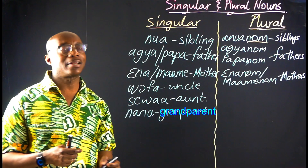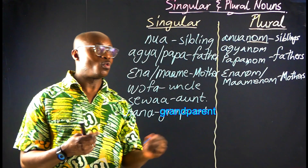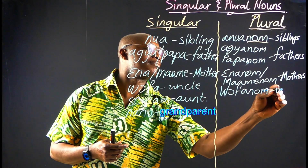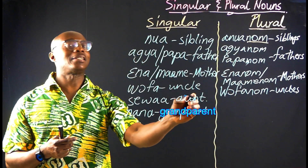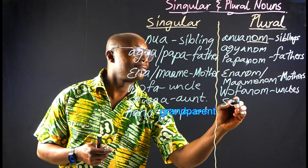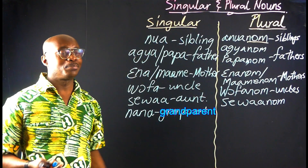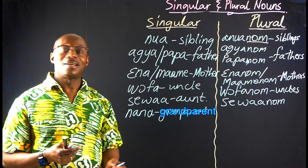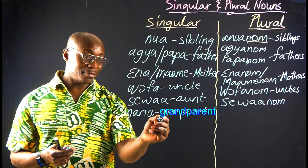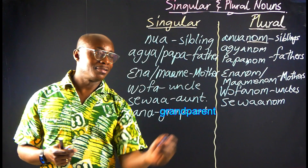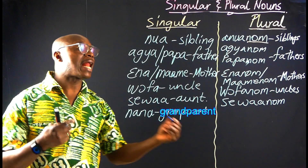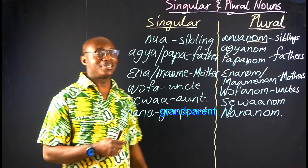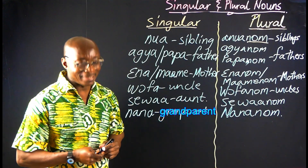Wafa — that is uncle — in plural we have Wafanum. Sewa — and that is aunt — in plural we have Sewaanum. And then the grandparents: one is Nana; in plural, we say Nananum.